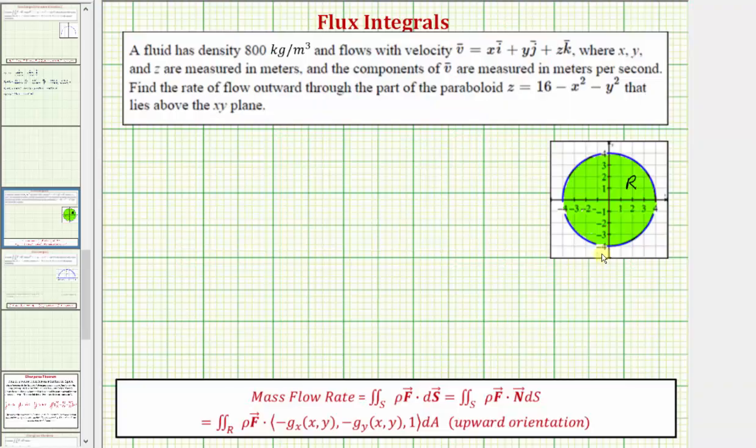Going back to our work, with a slight modification of the basic flux integral, we can determine this mass flow rate. If we include the density function in the flux integral as shown here, this will give us the mass flow rate. We'll deal with this surface integral by writing it as a double integral over the region R, where the region R is a projection of S onto the x-y plane.